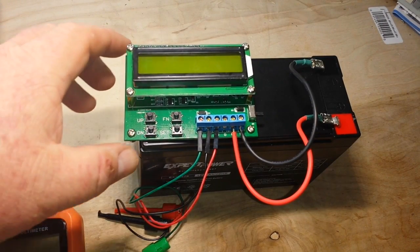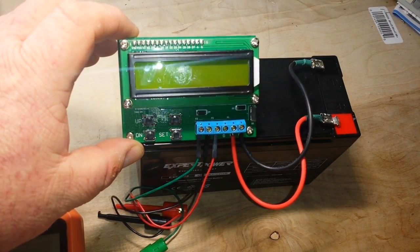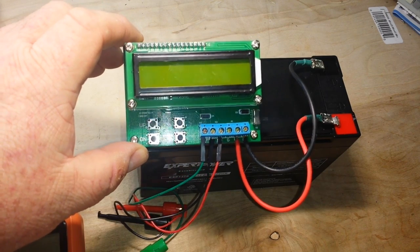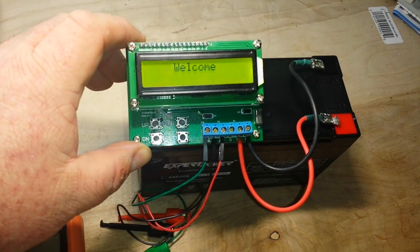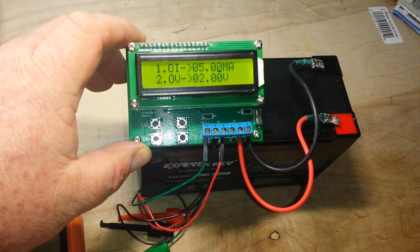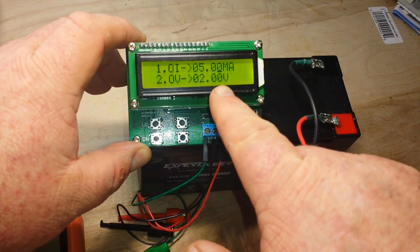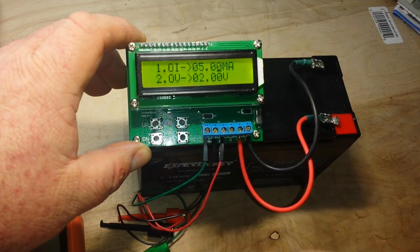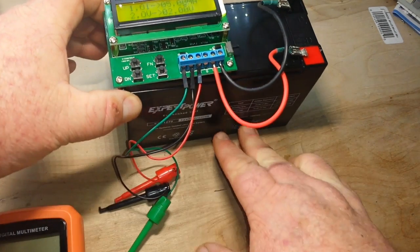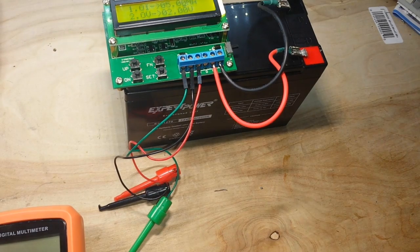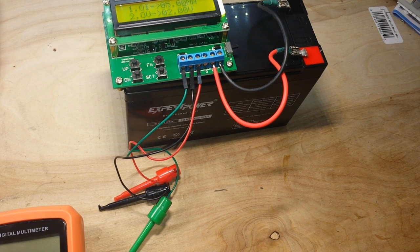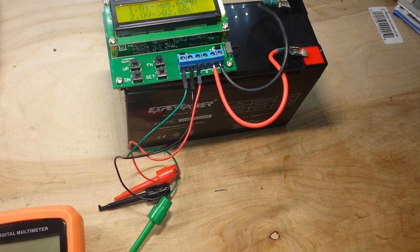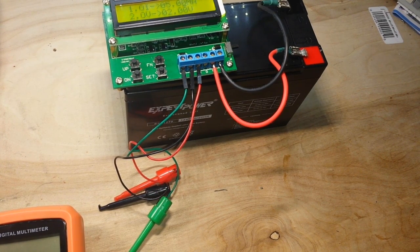For our voltage and current source, we'll be using this little board, this precision voltage and current source board, which is precision enough for our home use. And you can see I have voltage set for 2 volts and current set for 5 milliamps. It's being powered off of a 12 volt sealed lead acid battery. That way, we don't have to worry about any power supply ripple getting in there and causing us problems.